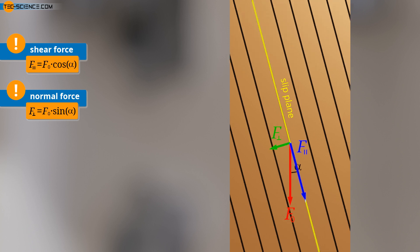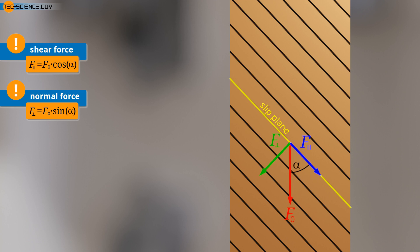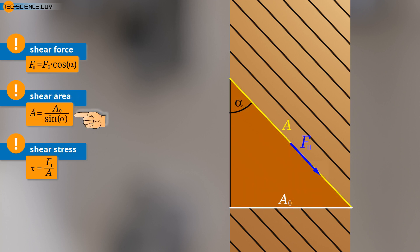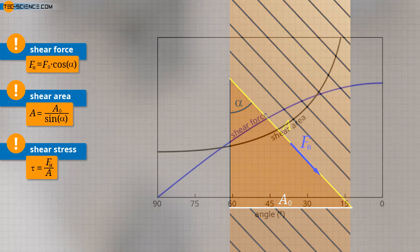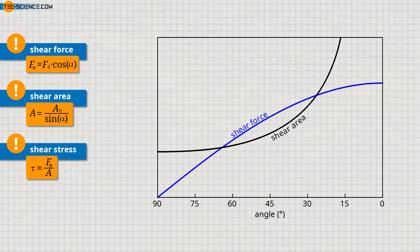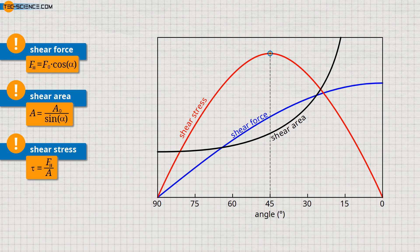Thus, there must be a favorable ratio between force and area to achieve the optimum condition where the greatest force per area occurs. The decisive factor for the sliding of the atomic planes is therefore not the force in the slip plane alone, but the force acting per unit area — which is the shear stress. The area of the slip plane is determined using the cross-section A0 of the sample and the angle alpha. The diagram schematically shows the increase in shear force and area with decreasing angle, and the resulting course of the shear stress. It is clear that the greatest shear stress occurs at an angle of 45 degrees to the tensile axis.